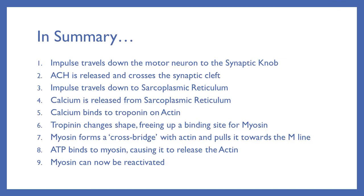In summary, let's look at all of the steps involved in a muscle contraction. The impulse travels down the motor neuron to the synaptic knob. Acetylcholine is released and crosses the synaptic cleft to the motor end plate. The activation at the motor end plate causes the impulse to travel down the T-tubules to the sarcoplasmic reticulum. Calcium is then released from the sarcoplasmic reticulum and binds to the troponin on the actin. The troponin changes shape, freeing up a binding site for myosin. Myosin forms a crossbridge with actin and pulls it towards the M-line. ATP binds to myosin, causing it to release the actin, and the myosin can now be reactivated to do another pull.